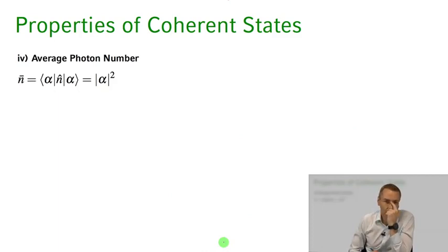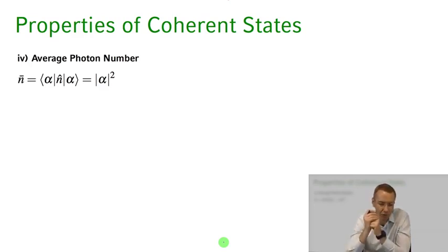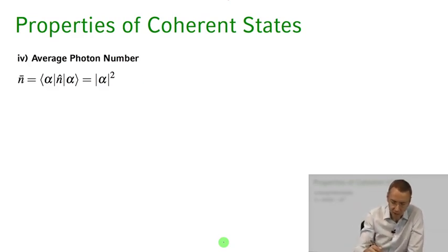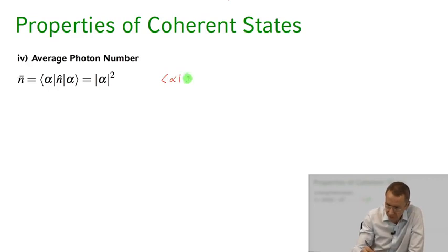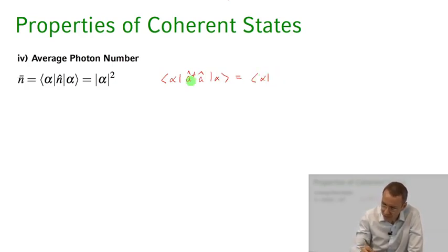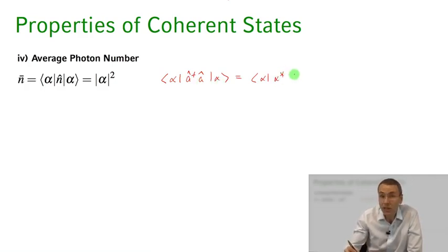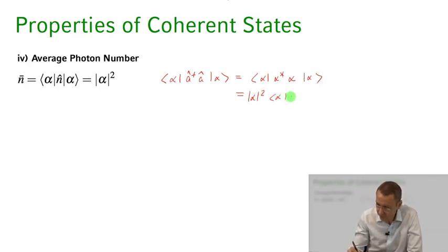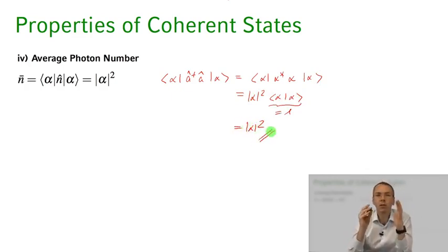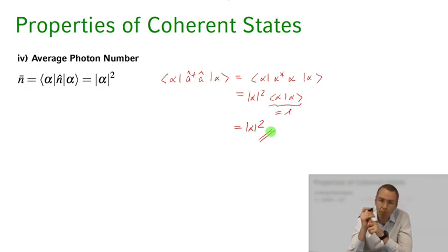What is the average photon number in a coherent state? Since the coherent state is a superposition of different photon numbers, we can calculate ⟨n̂⟩ = ⟨α|â†â|α⟩. Using the eigenstate property, â†applied to the bra gives α*, and â applied to |α⟩ gives α, so this equals |α|² · ⟨α|α⟩ = |α|². The mean photon number in the coherent state is given by the magnitude squared of the complex amplitude α.